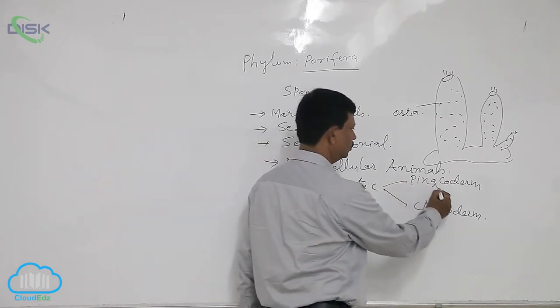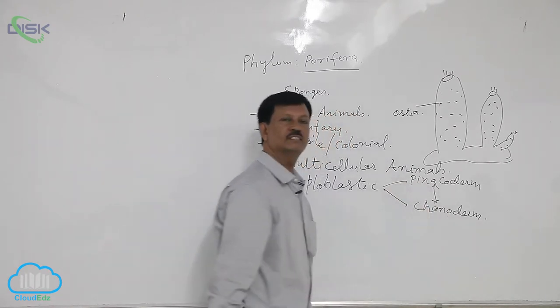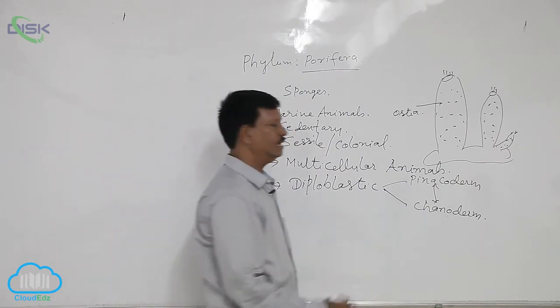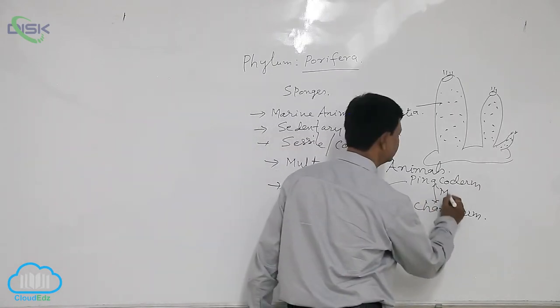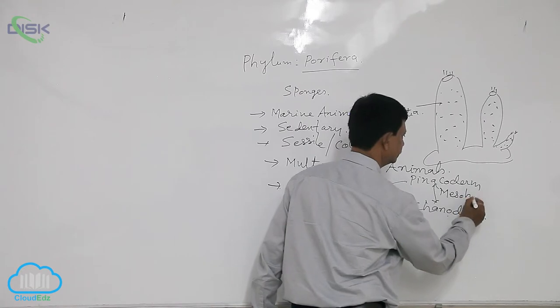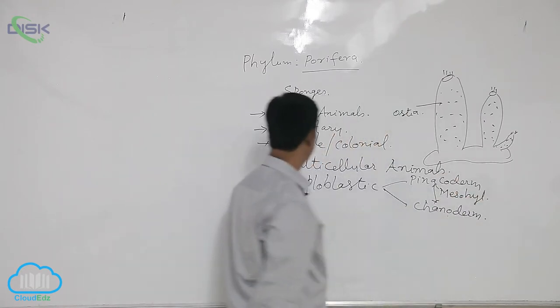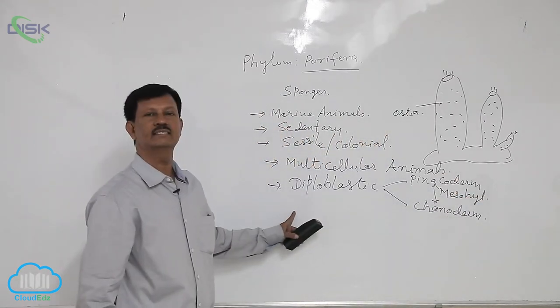In between these two, there is a jelly-like substance present, known as the mesenchyme or mesohyl. Hence, they are known as diploblastic in nature.